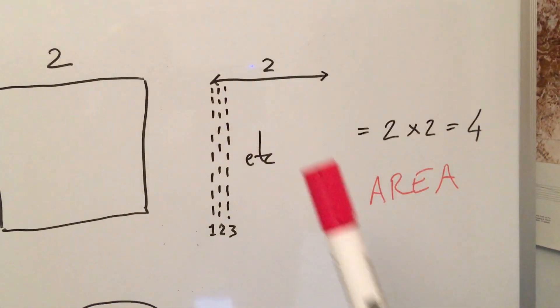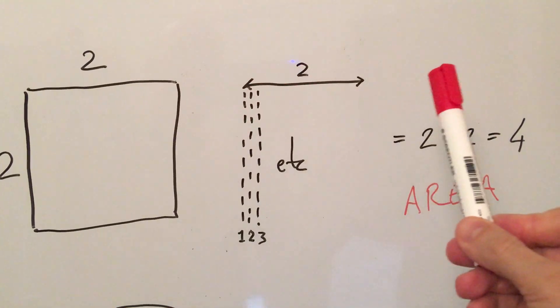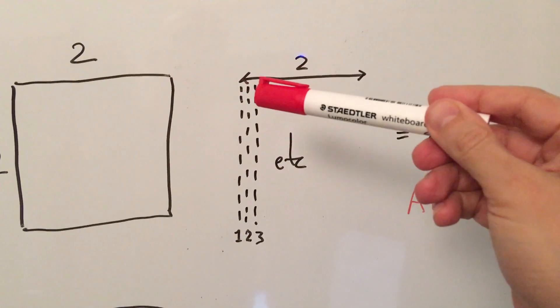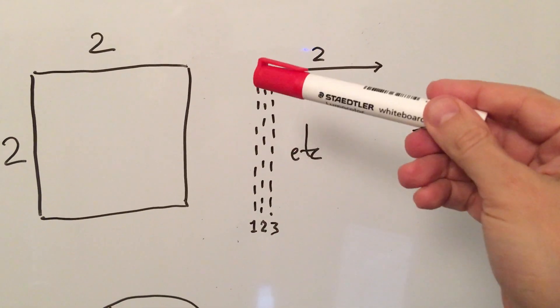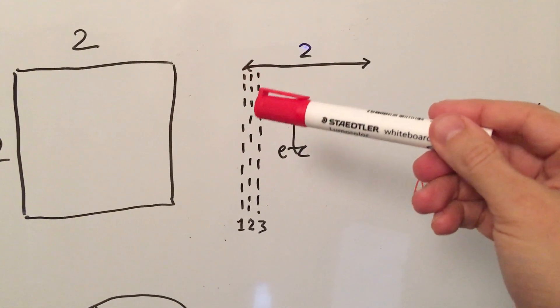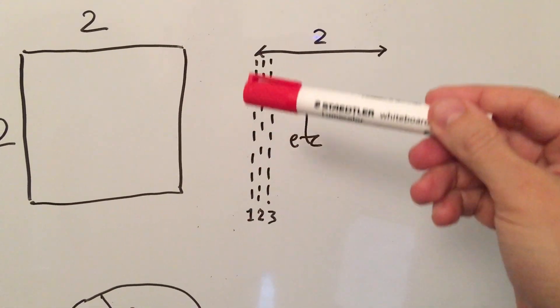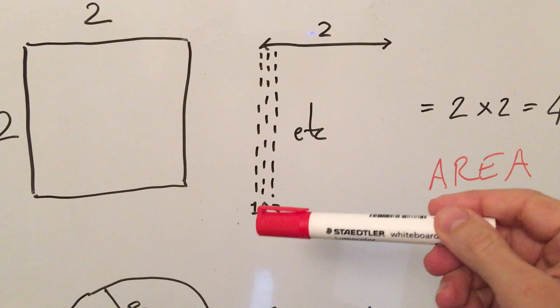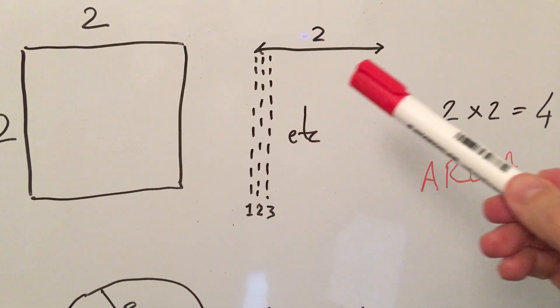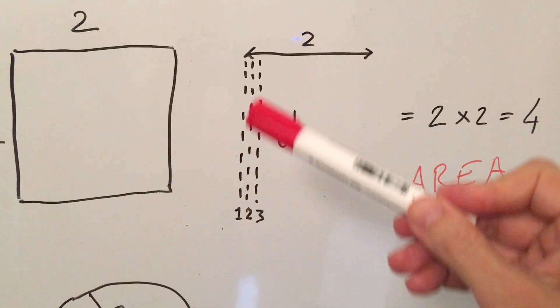Why does that work? Because what we're basically saying is this distance, which is two, multiplied by this distance, which basically means if you think of it as drawing one thin line next to each other, next to each other, so you've got one, two, three, etc., until you fill up the whole square.